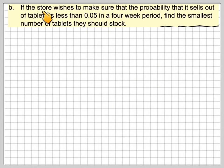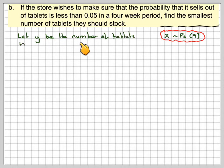Part B. If the store wishes to make sure that it sells out of tablets is less than 0.05 in a four-week period, find the smallest number of tablets they should stock. So we've got Poisson 9 because we're considering the four-week period. Let Y, little y, be the number of tablets in stock. Sorry, we'll just go back. Y is Poisson 9, not X. Let y be the number of tablets in stock.